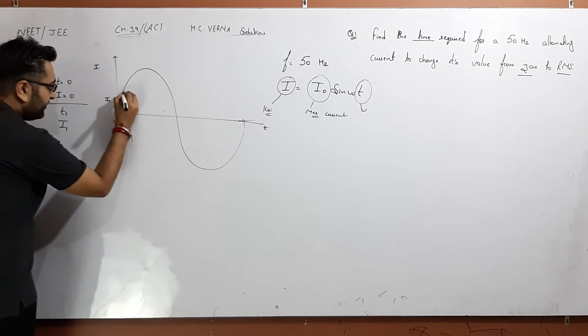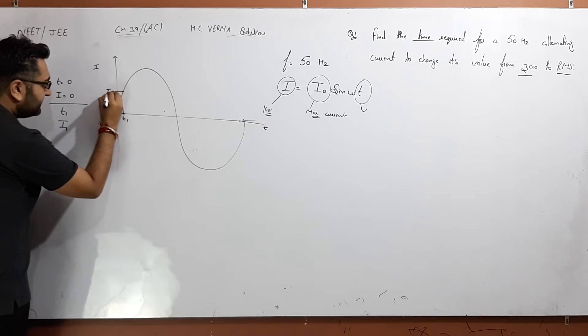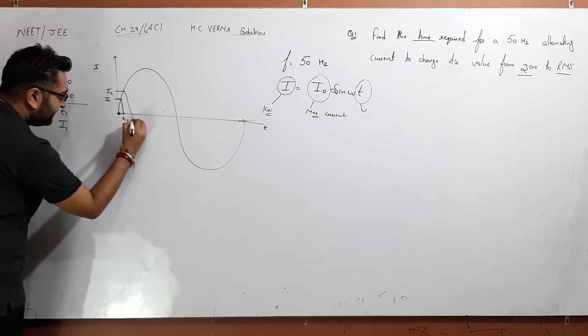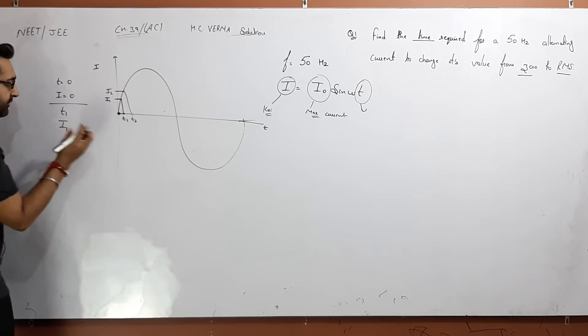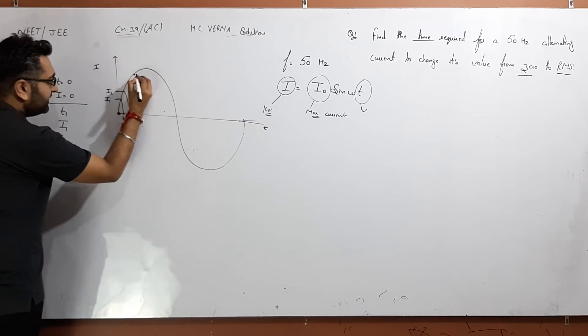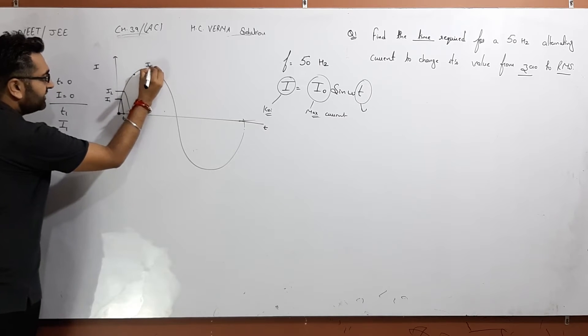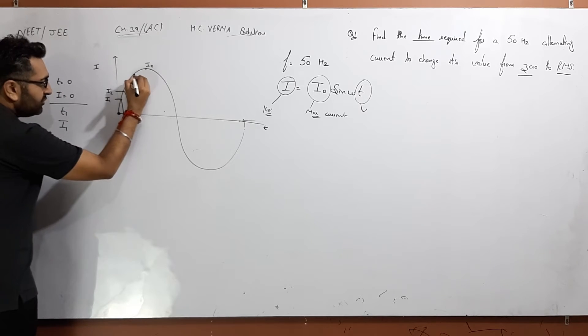Suppose here the current is I2, so here the time is t2. So at t2 time, the current is I2. If I say here, the peak current is I naught. So it is a little bit less.